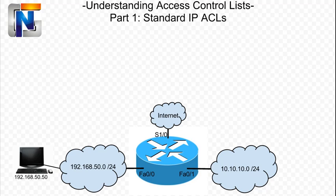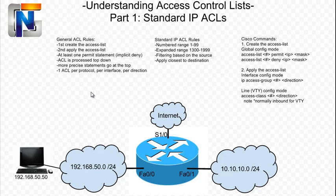I'm going to begin here with some basic information, some general ACL rules, then some standard IP ACL rules, and also a brief example of some of the commands we're going to be doing. Starting off here on the left are general ACL rules. Our number one rule is we need to always first create the access list before we move on to applying it. We have to create a particular list, and then we will apply that list to an interface.